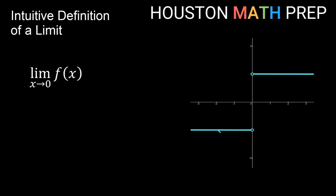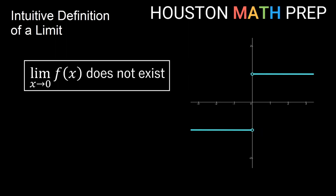For our third example, we have two horizontal pieces of a function, both leading to an open hole — an undefined point at x equals 0. For the limit, we just want to know: do we approach the same y value from the left side and the right side? From the left side, as I get closer and closer to 0, I approach the hole at a y value of negative 1. But approaching from the right, I get closer to a y value of positive 1. Since I am approaching a different y value from each side, this limit does not exist. When the limit does not exist, we simply state that — we don't go on to state the y values.